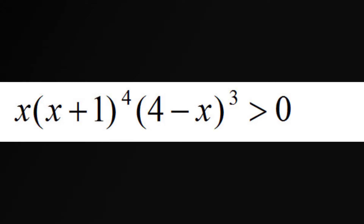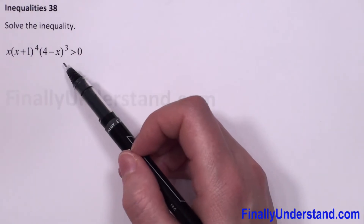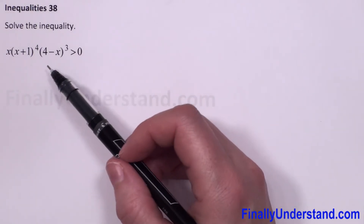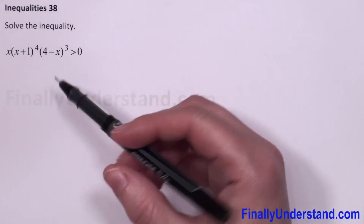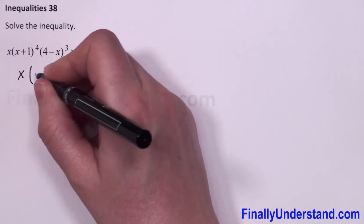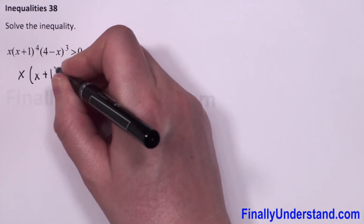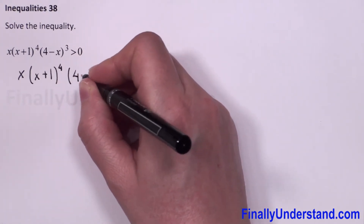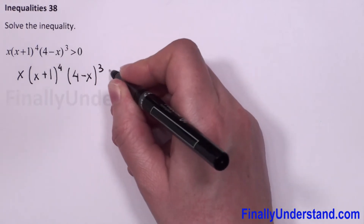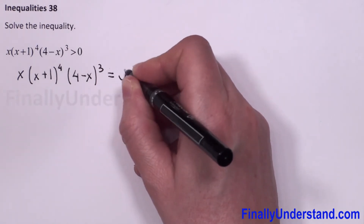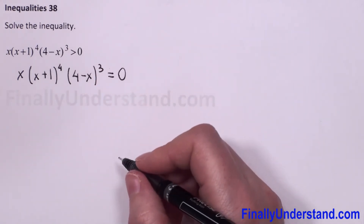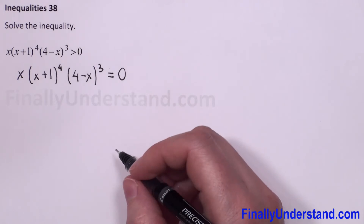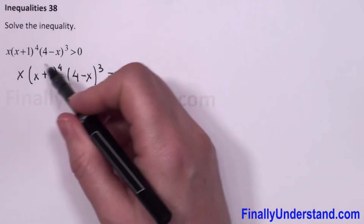We have another example — a non-linear inequality. It means we have to make the left side equal to zero. So we have x times (x plus 1) to the power 4 times (4 minus x) to the power 3, equal to zero. Next, from the obtained equation, we have to find the roots.